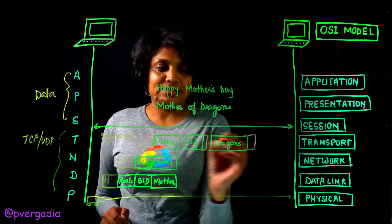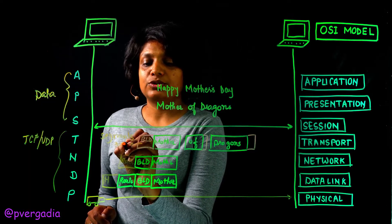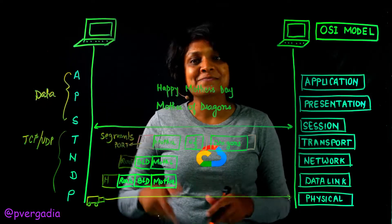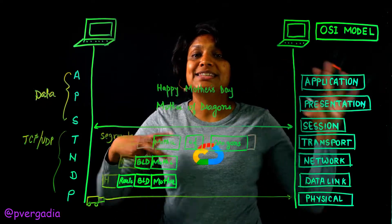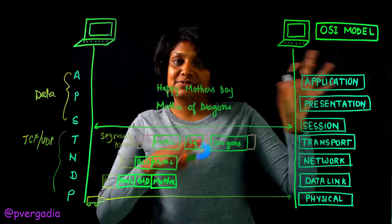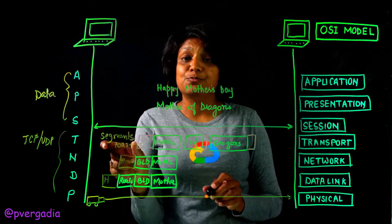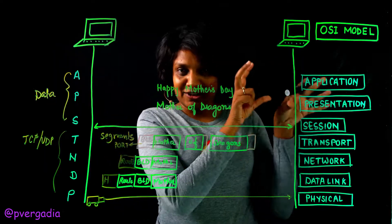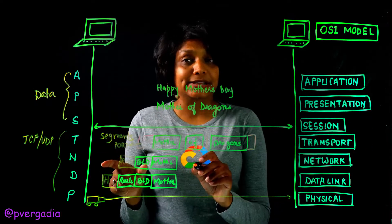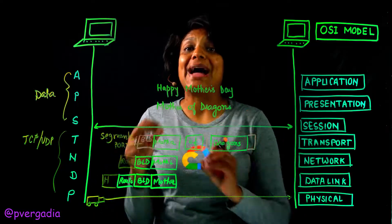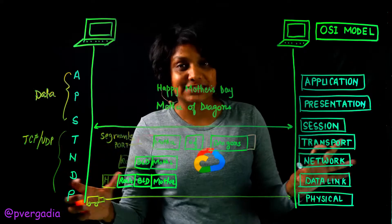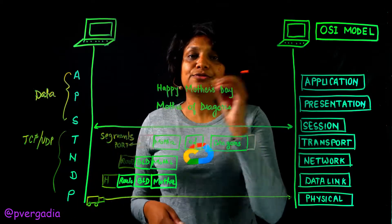At the Transport layer we also associate ports — for example, port 80 for HTTP and port 443 for HTTPS. This information helps ensure the message is received at the right port, so the server knows which port to listen on. At the Network layer, each segment gets more padded information, such as the route we added in our analogy.